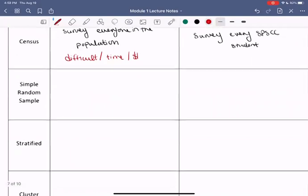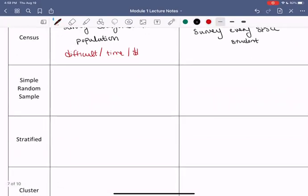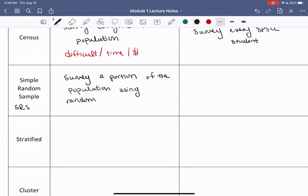The next sampling method is called a simple random sample. Simple random samples, often abbreviated SRS. This is when you survey a portion of the population using random selection. Survey a portion or a subset of the population using random selection.